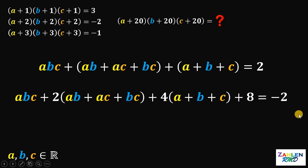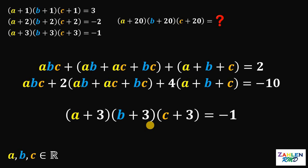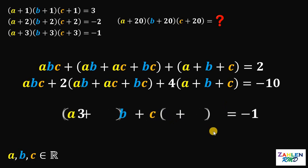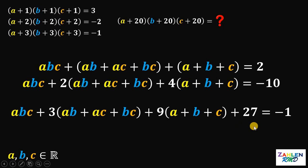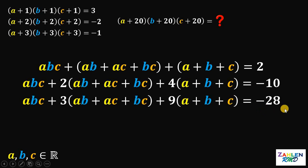Now let's get the third equation. Using the same pattern, we get abc + 3(ab + ac + bc) + 9(a + b + c) + 27, where the coefficients are 3, 3 squared (9), and 3 cubed (27). Subtracting 27 from both sides gives us negative 28 on the right-hand side.